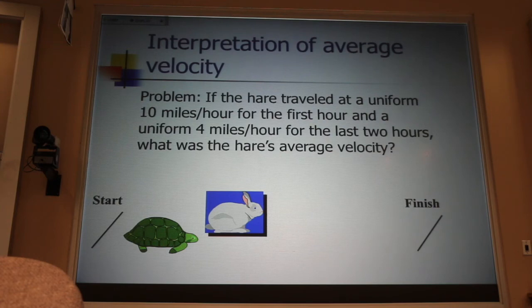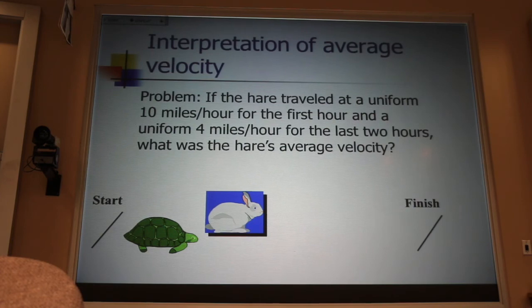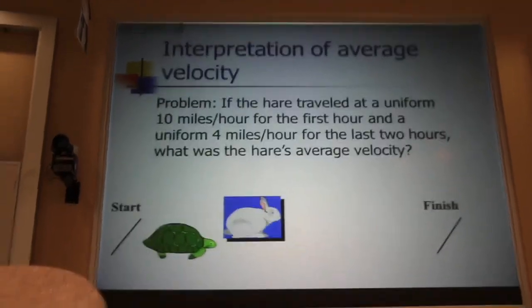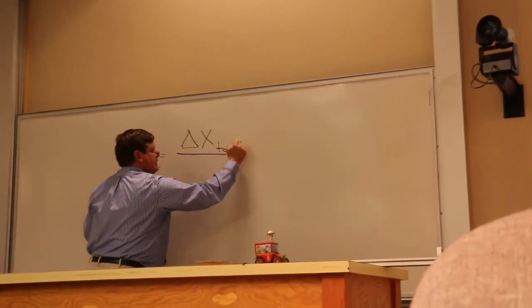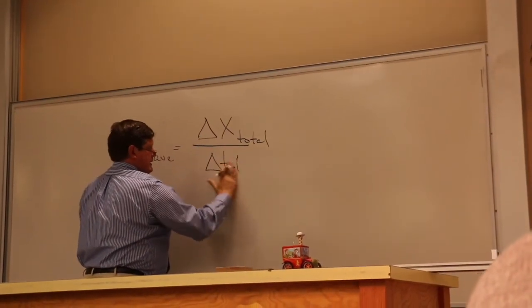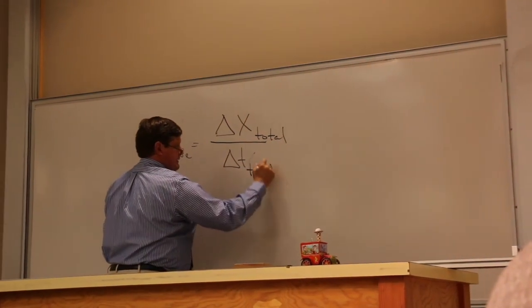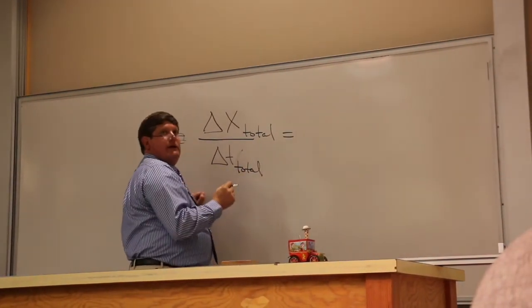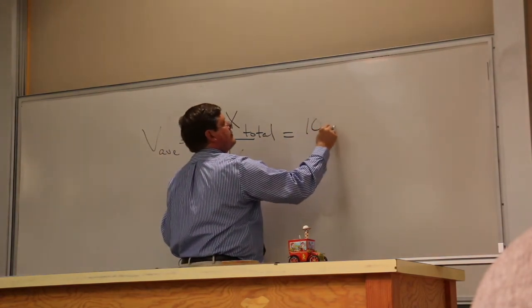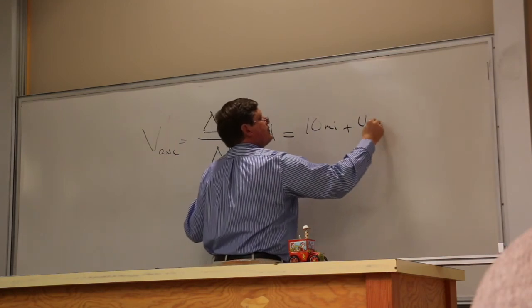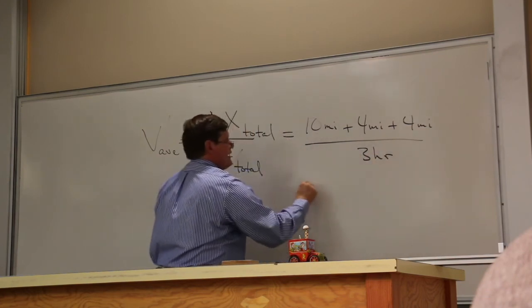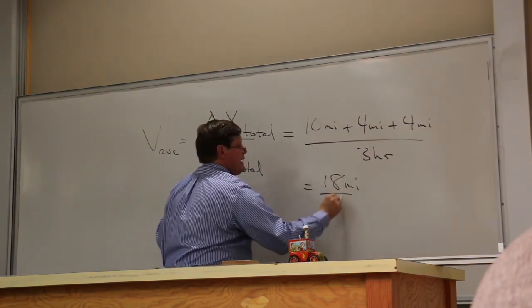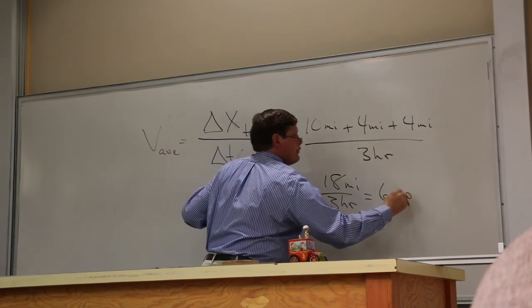The average velocity is going to be the change in position. If you're just going to the right or to the left, we use delta x. If you're just going up or down, we use delta y. It's the total displacement divided by the total time. Now, the total displacement, the bunny rabbit covers 10 miles in the first hour and 4 miles in the second hour plus 4 miles in the third hour and does that in 3 hours. So that's going to be 18 miles in 3 hours or 6 miles per hour.